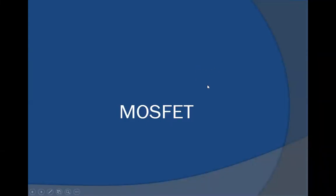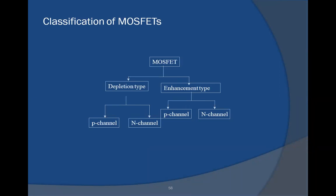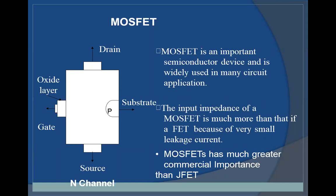Next we are going to see MOSFET. MOSFET is classified into two types: depletion type and enhancement type. Each type is further classified into P-type channel and N-type channel. MOSFET is an important semiconductor device widely used in many circuit applications. The input impedance of MOSFET is much greater than that of JFET because of very small leakage current, giving MOSFET much greater commercial importance than JFET.